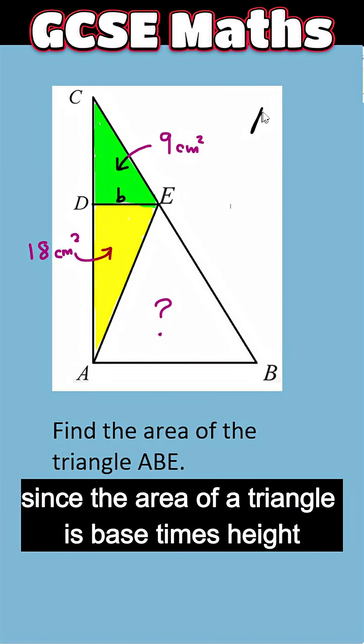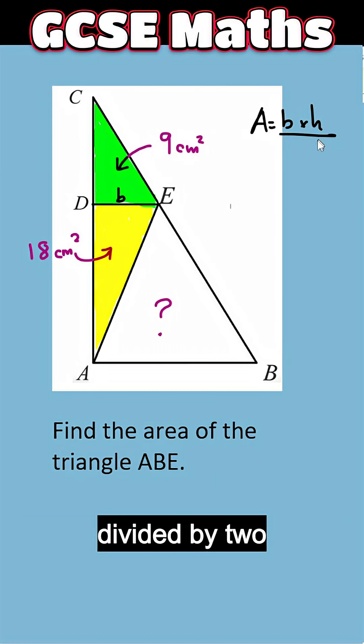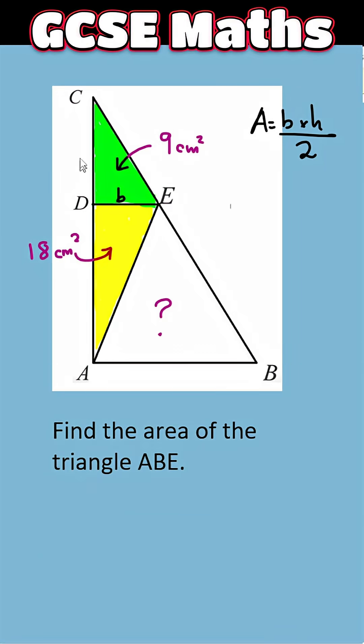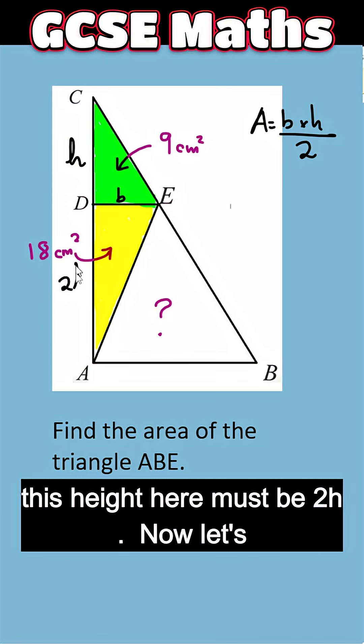Now, since the area of a triangle is base times height divided by 2 and they both have the same base, obviously, if this height is H, this height here must be 2H.